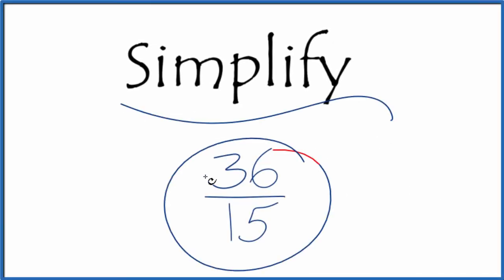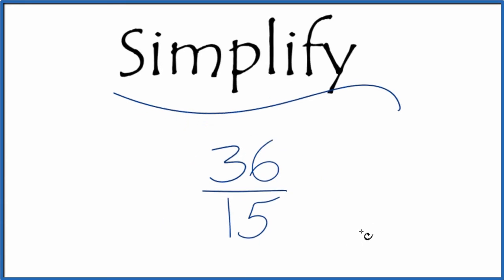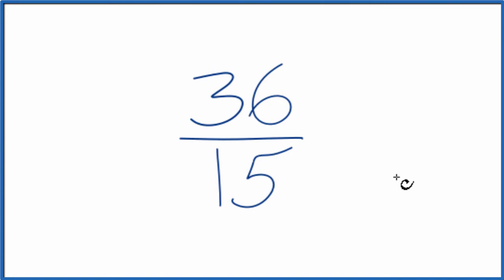Let's simplify the fraction 36 over 15. What we want to do is find an equivalent fraction, another fraction that has the same value, we've just reduced it to lowest terms.